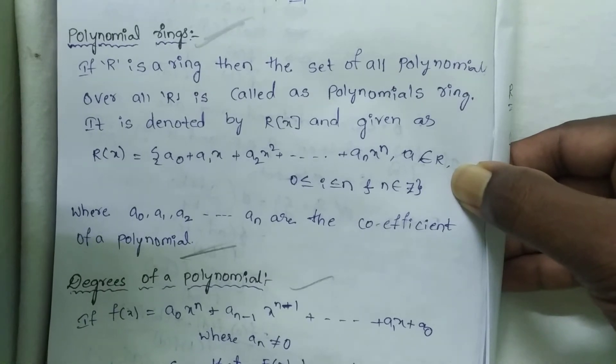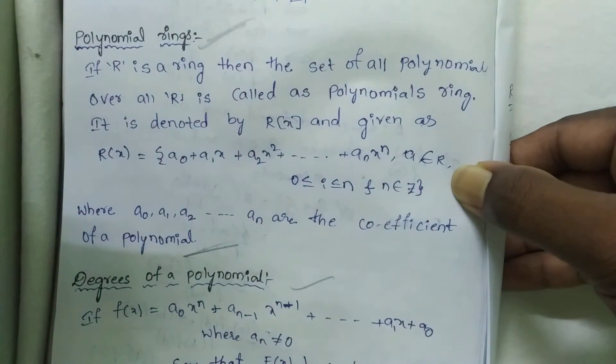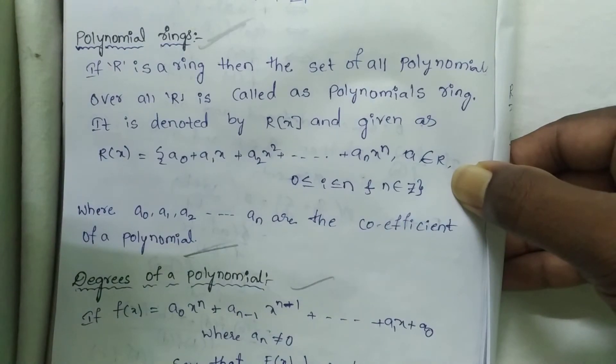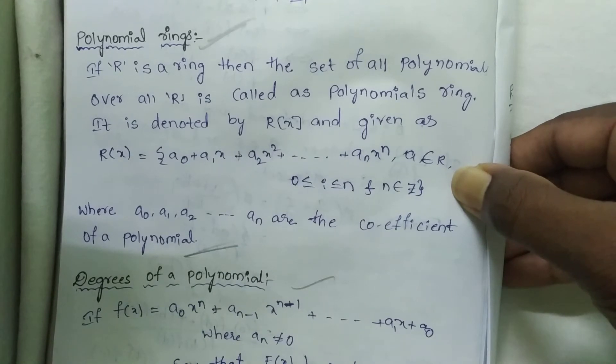Welcome to Rajesh Rekirut. Today our topic is polynomial rings. If capital R is a ring, then the set of all polynomials over R is called a polynomial ring.